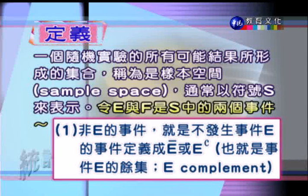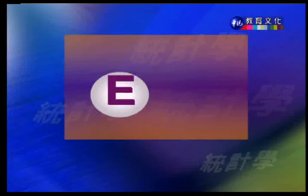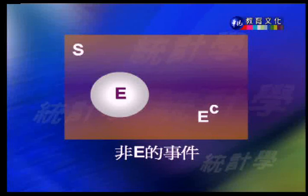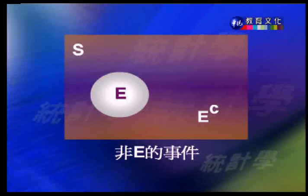第一種關係叫做 E 的餘集（補集），也就是不發生事件 E 的事件，符號寫成 Ē 或 E^c。它的意思是樣本空間內，只要 E 這個事件不發生，其餘都發生，就代表 E 的餘集這個事件發生。從圖形來解說：大方塊代表樣本空間，中間圓圈代表事件 E，扣除 E 之外的陰影部分就叫做 E 的餘集。